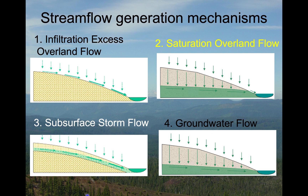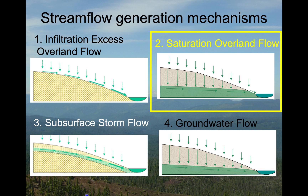We've been talking about the way water gets to streams — what we call stream flow generation mechanisms. When it rains on the landscape, most of the rain falls on the ground, not right in the stream channel, and somehow we've got to get it from the solid ground into the stream channel. In this video we are going to talk about saturation overland flow, which is very much related to the concept of variable source areas that contribute to stream flow.